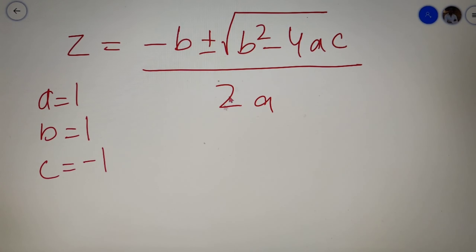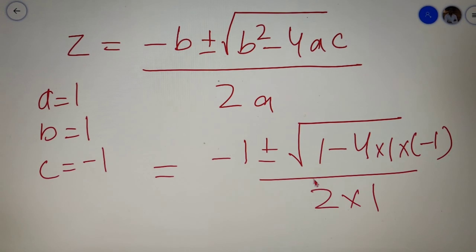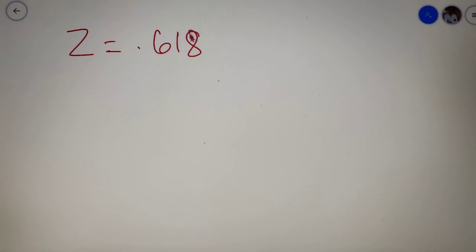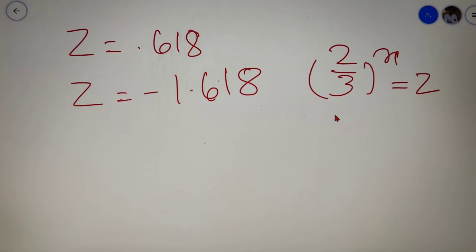Putting these values into the formula we get minus 1 plus or minus root of 1 minus 4 into 1 into minus 1, whole divided by 2 into 1. Upon calculating, we get two values of z: z equals 0.618 and z equals minus 1.618. Now since we took 2 by 3 whole to the power x as z, and a positive number raised to any power gives a positive number, the value minus 1.618 cannot be possible. So our answer for z is 0.618.